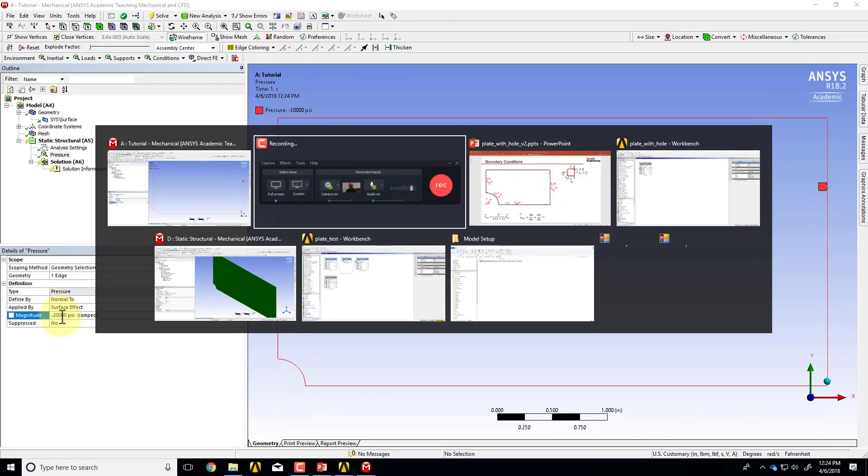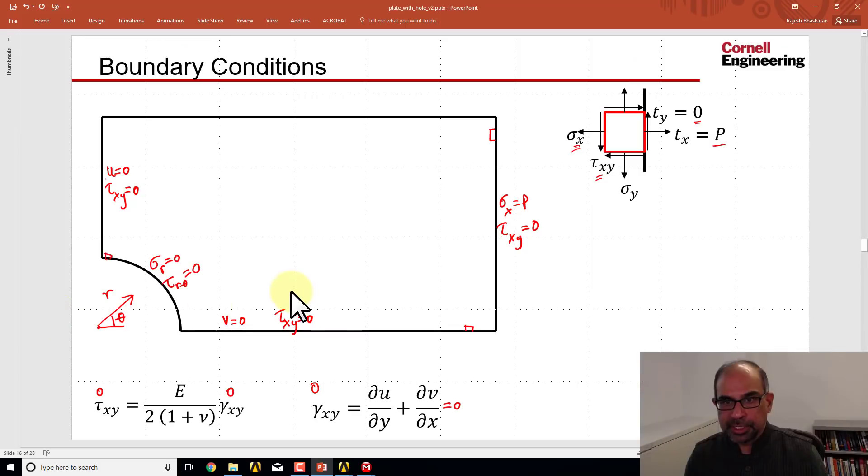If I go back to my boundary condition slide, so now I have this boundary condition at the right boundary. Let me go to this boundary. Now here, again, tau xy is equal to 0. That comes from the tangential traction, and ANSYS already has that. So what I have to do is set this condition, which is the displacement condition.